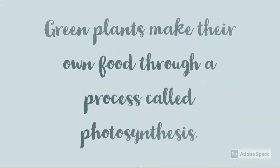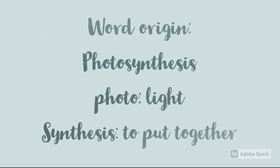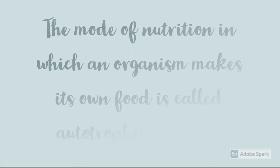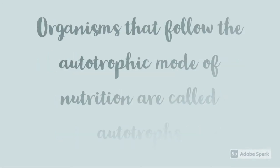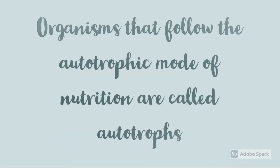Green plants make their own food through a process called photosynthesis. The origin of the word photosynthesis is: photo means light and synthesis means to put together. The mode of nutrition in which an organism makes its own food is called as autotrophic nutrition.